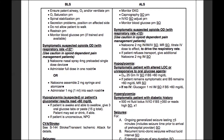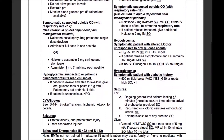We can use naloxone nasal spray — one version is 4 milligrams in a preloaded single-dose device where you administer the full dose in one nostril. Or more commonly, you'll have naloxone that you assemble in a 2-milligram syringe with an atomizer known as a MAD — mucosal atomizer device — and administer one milligram or one ml into each nostril.